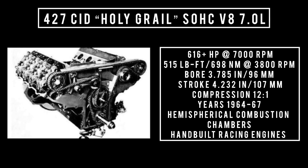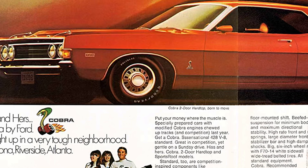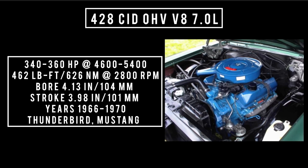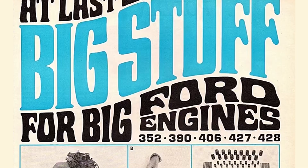As great and legendary as the 427 was, it proved very expensive to produce — even the slightest shift when casting the cores would make the block unusable. So Ford came up with the 428 cubic inch displacement overhead valve V8. It produced anywhere between 340 to 360 horsepower between 4,600 and 5,400 RPM, up to 462 pound-feet or 626 newton meters at 2,800 RPM, with a bore of 4.13 inches and a stroke of 3.8 inches. Used between 1966 and 1970, found in the Thunderbird, Mustang, and Cougar.